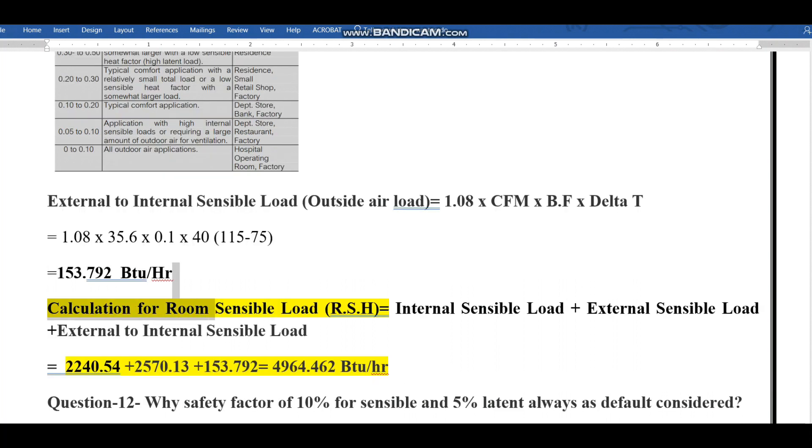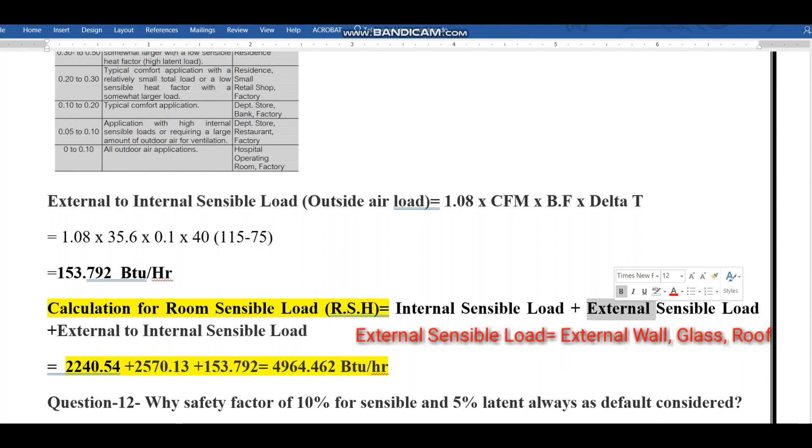Now we can find the answer for total room sensible load: room internal sensible load, room external sensible load, and external to internal sensible load. Room internal sensible load includes people, lighting, power or motor load, equipment appliance load, floor and partition. External sensible load includes floor, wall, glasses. External to internal sensible load is ventilation, the makeup air.